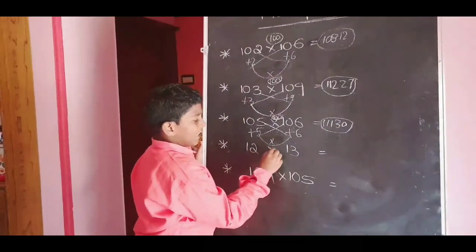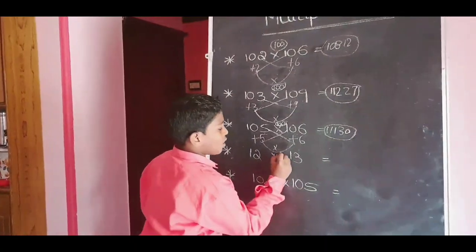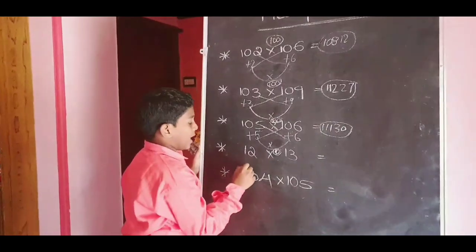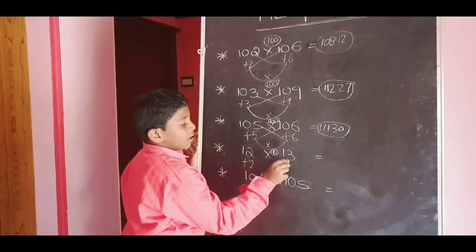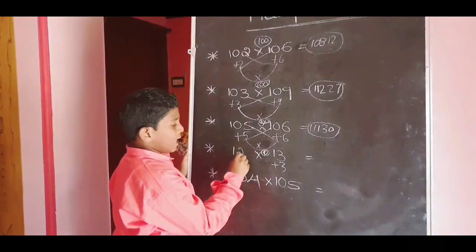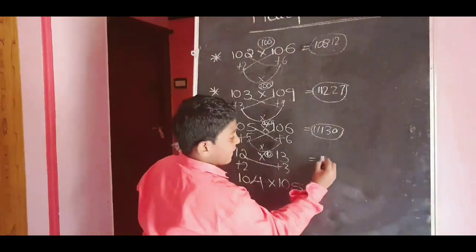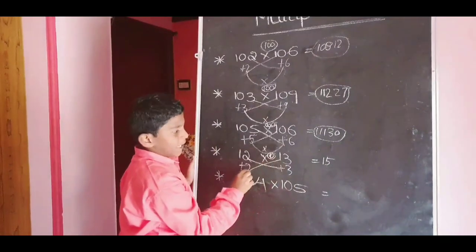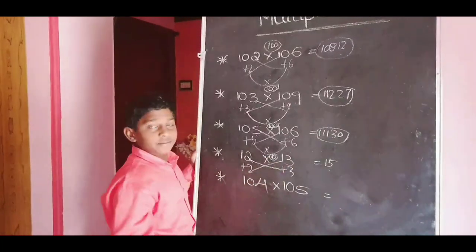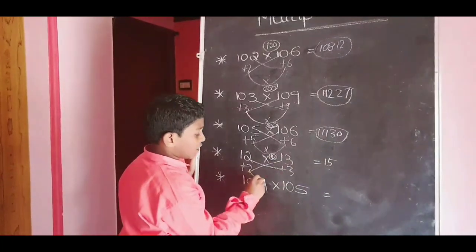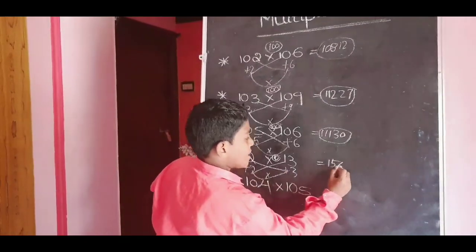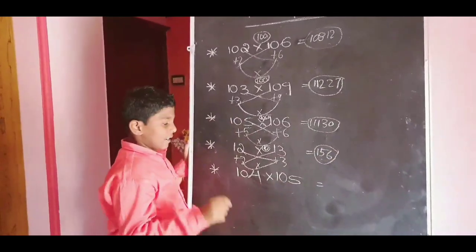Next: 12 into 13. This is nearest to 10. For 10, 12 plus 2; for 10, 13 plus 3. 12 plus 3 equals 15. 13 plus 2 equals 15. 2 plus 3 is 5, and 5 plus 10 equals 15. After, these two should multiply: 2 into 3. 2 threes are 6. The answer is 156.